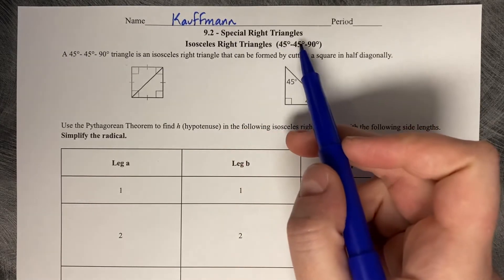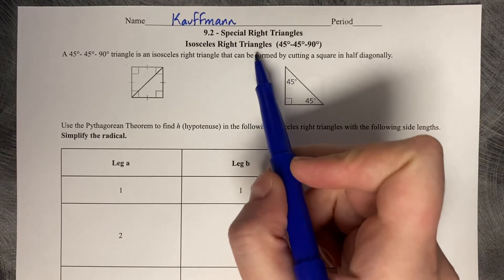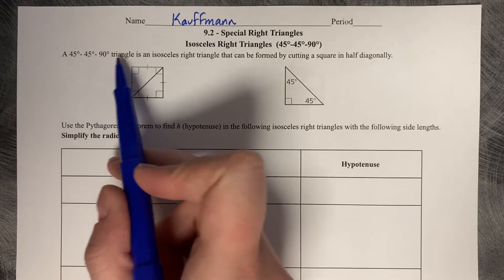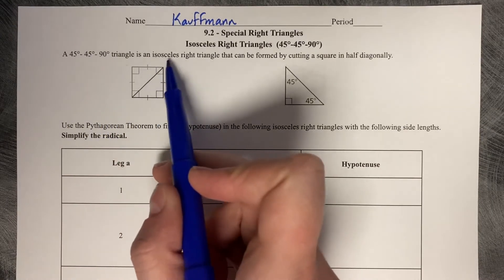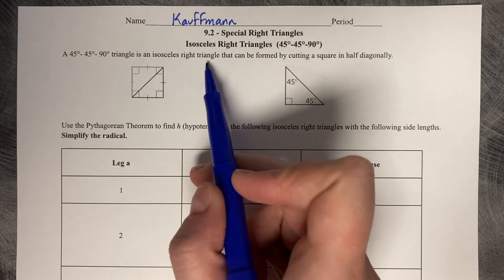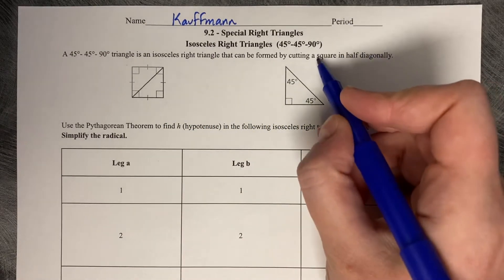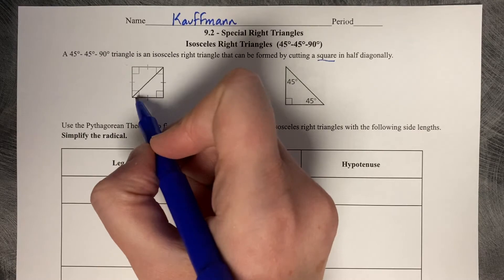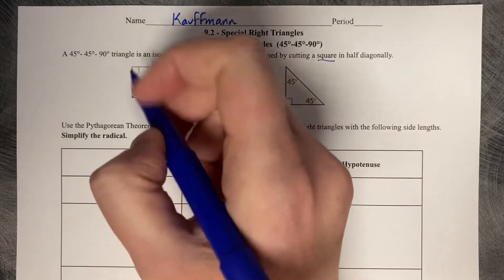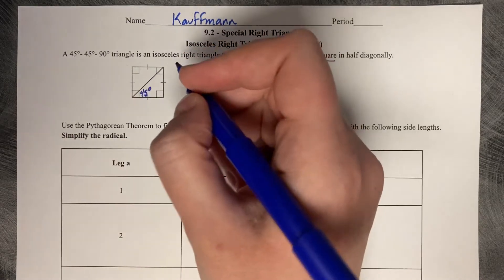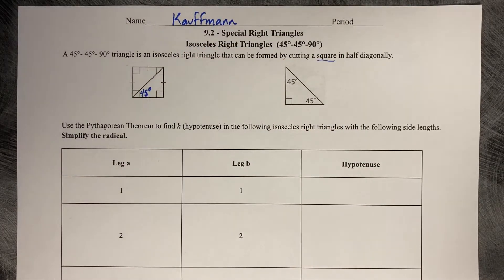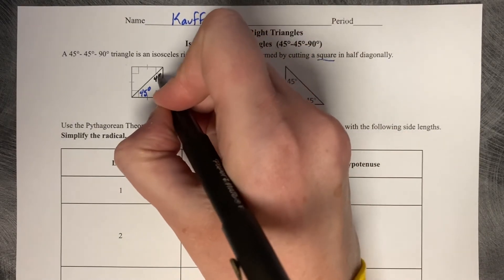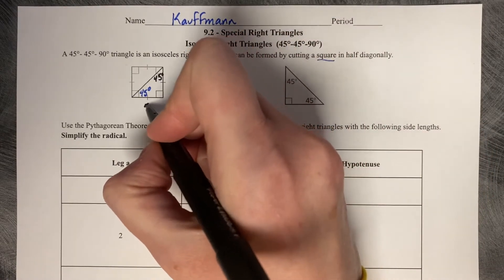Section 9.2: special right triangles — isosceles right triangles, 45-45-90. A 45-45-90 triangle is an isosceles right triangle that can be formed by cutting a square in half diagonally. Each corner of the square is 90 degrees, and when we cut it diagonally, each corner angle becomes 45 degrees. These two angles are both 45 degrees, and let's say the side length is five.